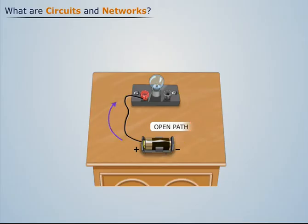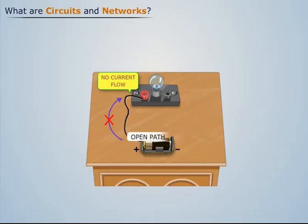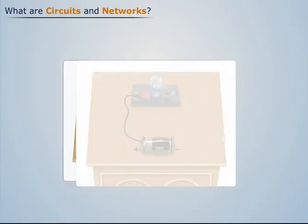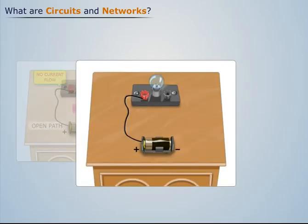Therefore, no current flows through the bulb and it does not glow. Thus we can say that this system is a network. Now consider the same bulb and battery arrangement.